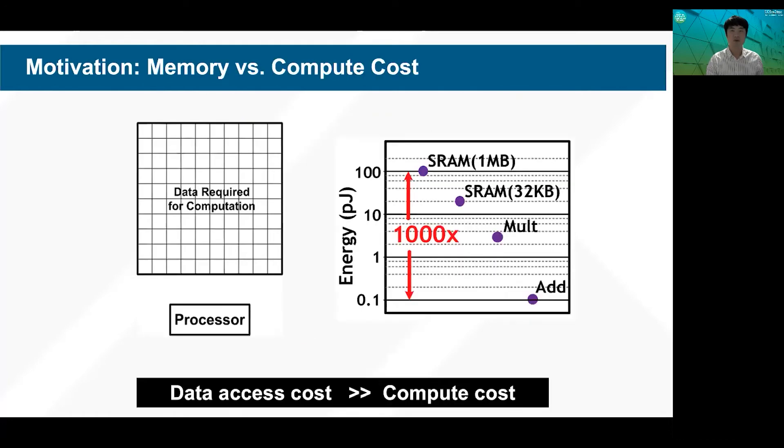Our group is also researching the data movement issue in the hardware. Emerging applications require huge data volumes, but unfortunately, the cost of memory access is several orders of magnitude higher than the computation due to the bottlenecks between the memory and processor.